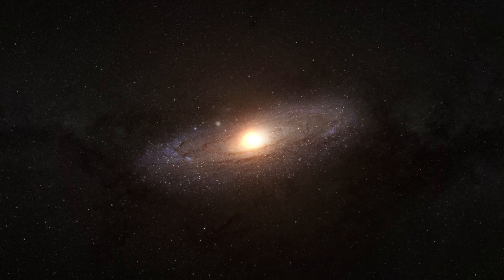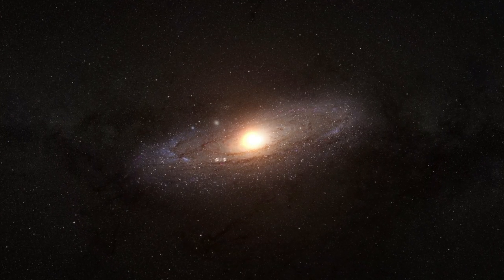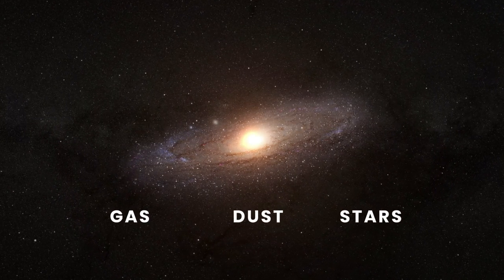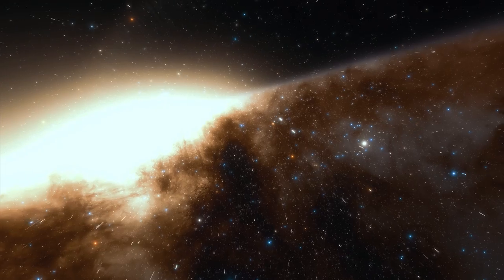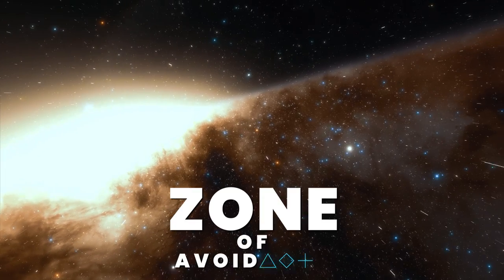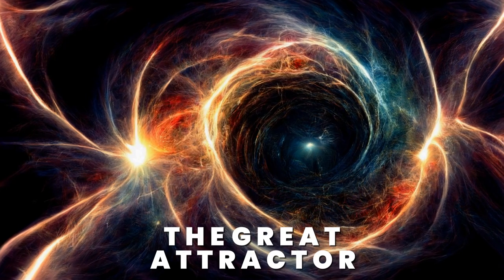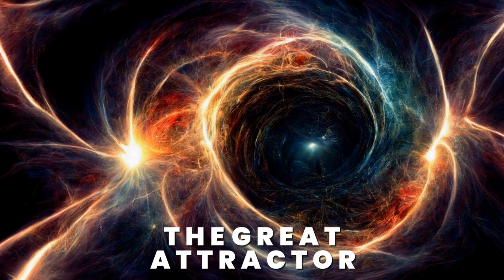On that side of the Milky Way, the disk of our galaxy, which is full of gas, dust and stars, obscures the view from Earth. Astronomers have called this region the Zone of Avoidance, and something called the Great Attractor sits deep in that zone.